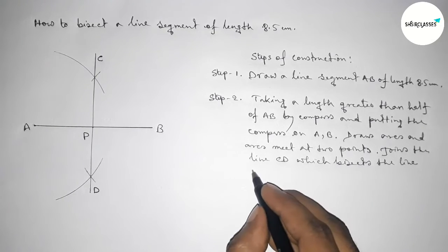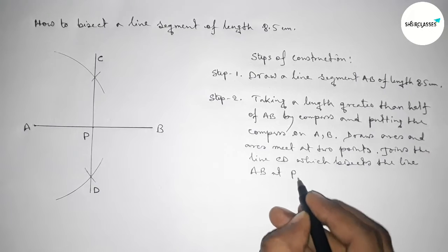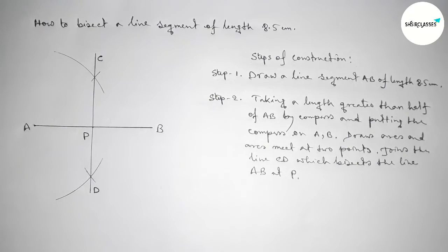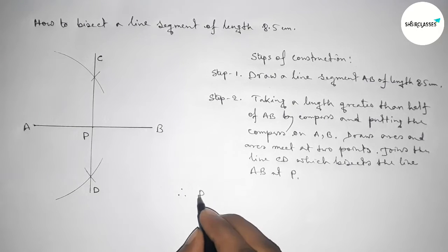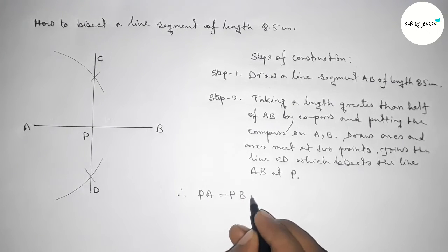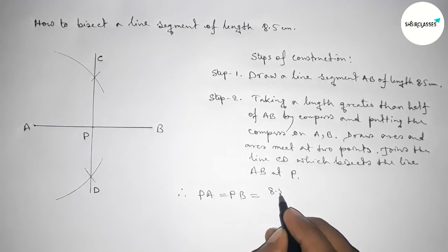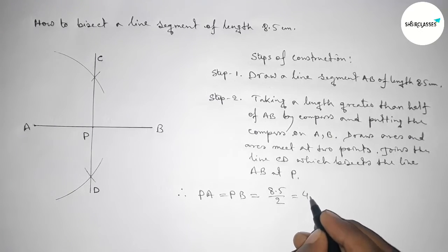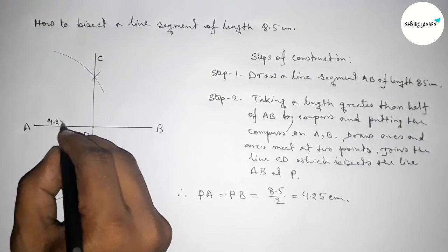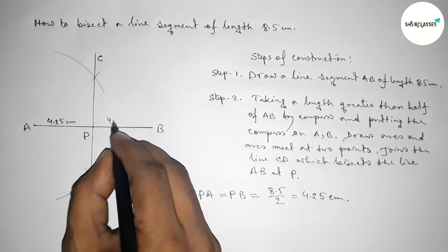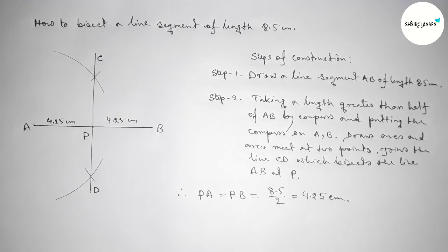Therefore, the lengths PA and PB are equal. So PA equals PB equals 8.5 divided by 2, which is 4.25 centimeters. So this length is 4.25 centimeters and this length is 4.25 centimeters.